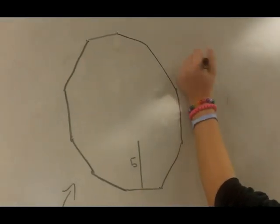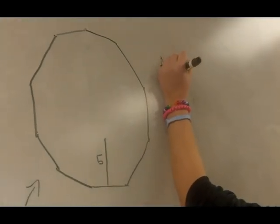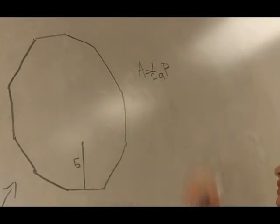My name is Luciana. We're going to find the area. The area is 1/2 times the apothem times the perimeter.